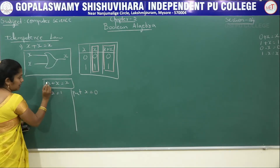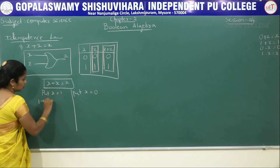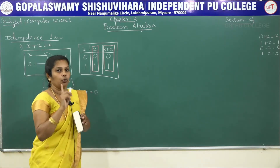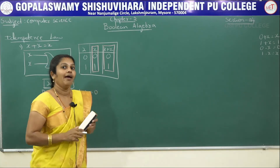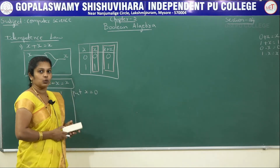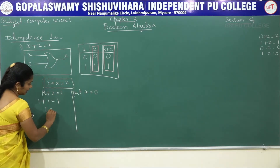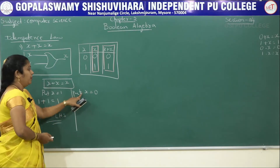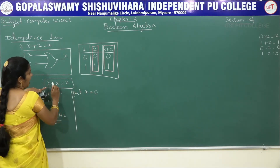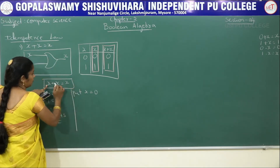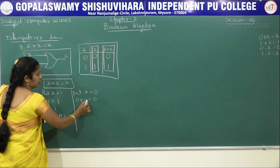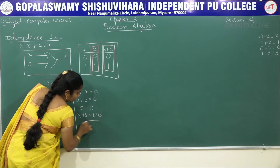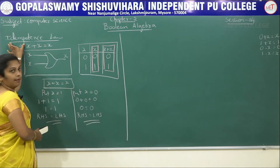For x equals 1: substituting into x plus x equals x gives 1 plus 1 equals 1. In Boolean algebra, 1 plus 1 is 1 only — not 2, since Boolean algebra deals with binary numbers. Therefore, right-hand side equals left-hand side. For x equals 0: 0 plus 0 equals 0, so right-hand side equals left-hand side. This proves the first idempotence law.